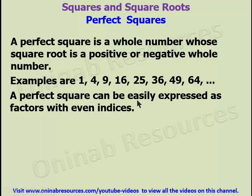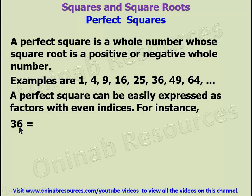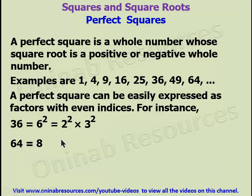Also, a perfect square can be easily expressed as factors with even indices — that is, with a power being divisible by 2. For instance, 36 is 6 squared, or we can have it as 2 squared times 3 squared. Also, 64 is 8 squared, and it can also be 2 squared times 2 to the power of 4. So, we'll go on to solve some problems.